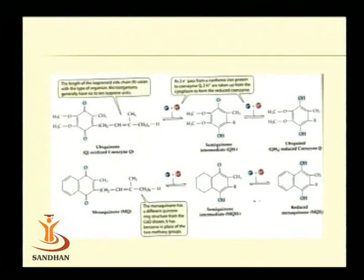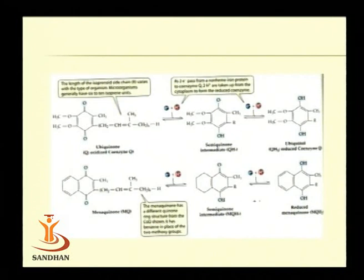In coenzyme Q, the keto group is transformed to hydroxyl groups upon reduction. Here also, two hydrogen ions are accepted — that means two electrons and two protons are accepted by this carrier.